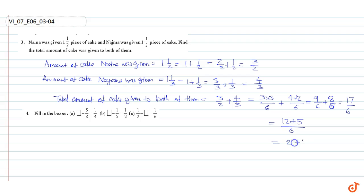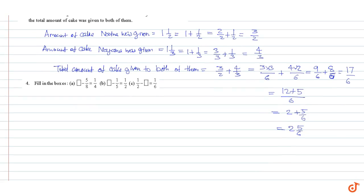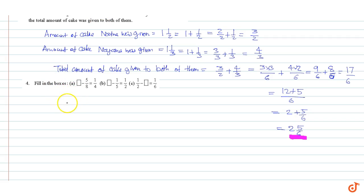This is equal to seventeen by six, which is equal to twelve plus five divided by six, equal to two and five by six. So the total amount of cake given to both of them is two and five by six. This is our answer. Question number four: fill in the boxes. Part A.